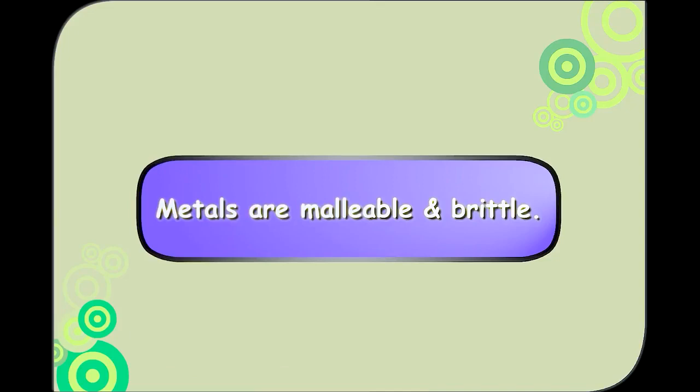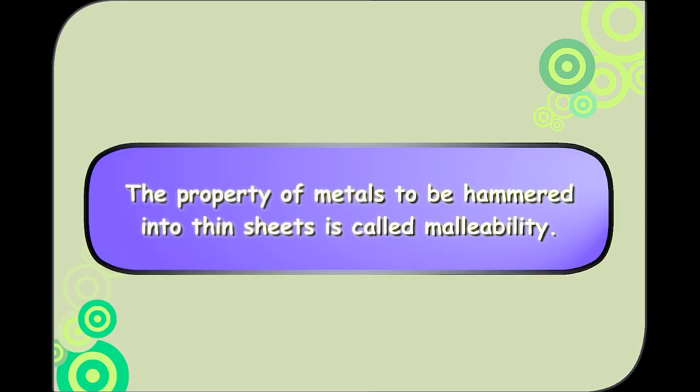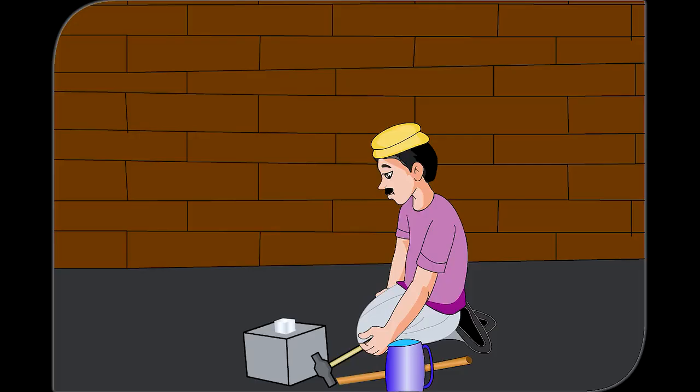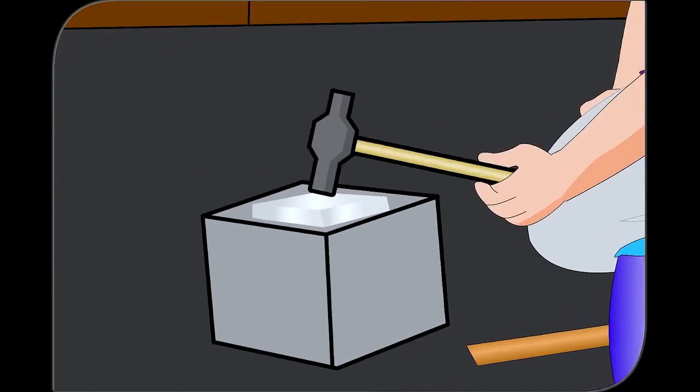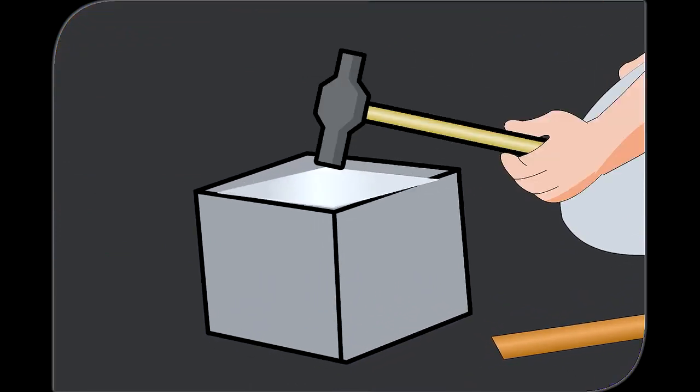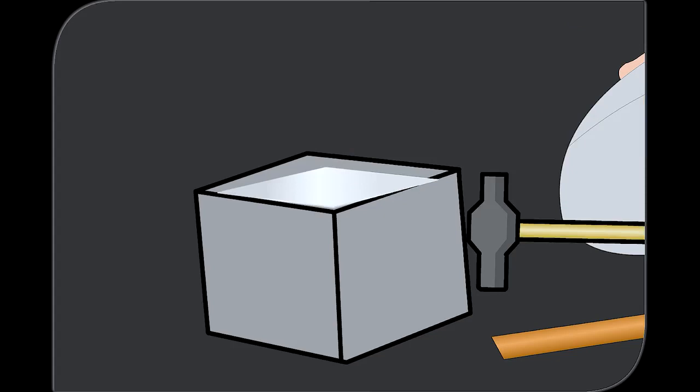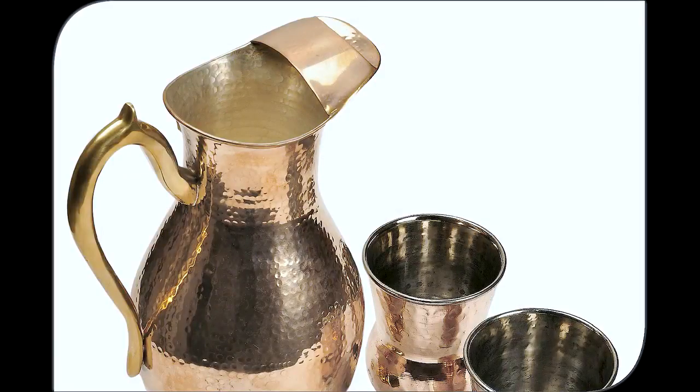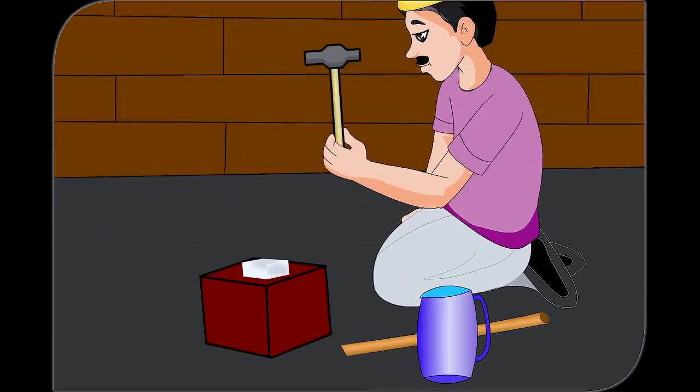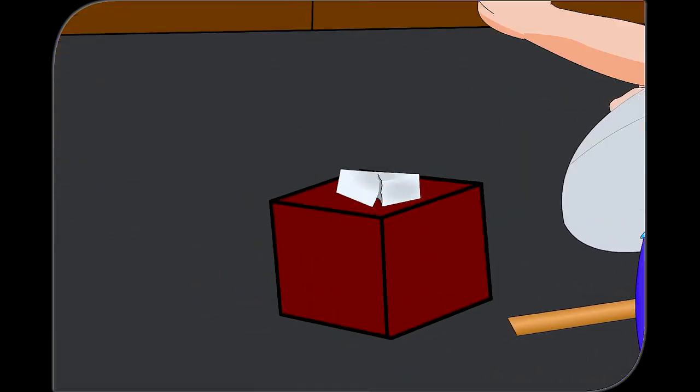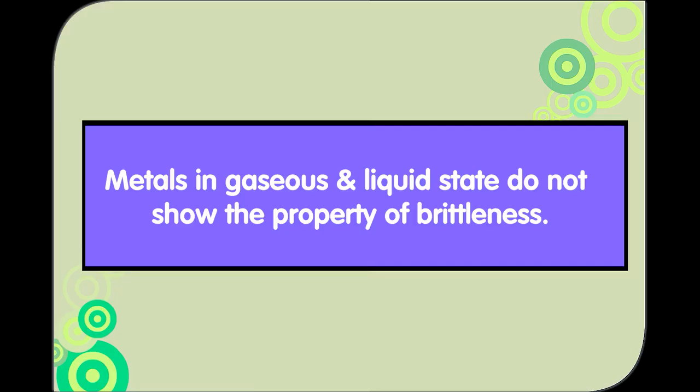Metals are malleable and brittle. The property of metals to be hammered into thin sheets is called malleability. Take a piece of aluminium metal and place it on a block of iron. Beat it with a hammer. You will observe that the aluminium metal turns into a thin sheet. This property of metals is used to make utensils of copper, jewellery of gold and silver. Some metals like zinc and arsenic are brittle. They break easily on hammering. Metals in gaseous and liquid state do not show the property of brittleness.